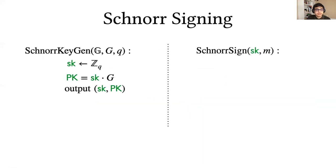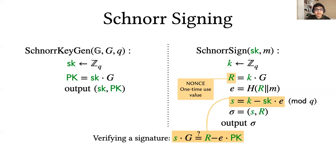Let's step through signing. You begin by sampling an instance key K and multiplying it with the group generator to get the nonce, hash the nonce with the message, and compute the signature as a linear combination of K and SK. The linear combination is weighted by E. Verifying a signature is simple. It's just checking the signing equation in the exponent.